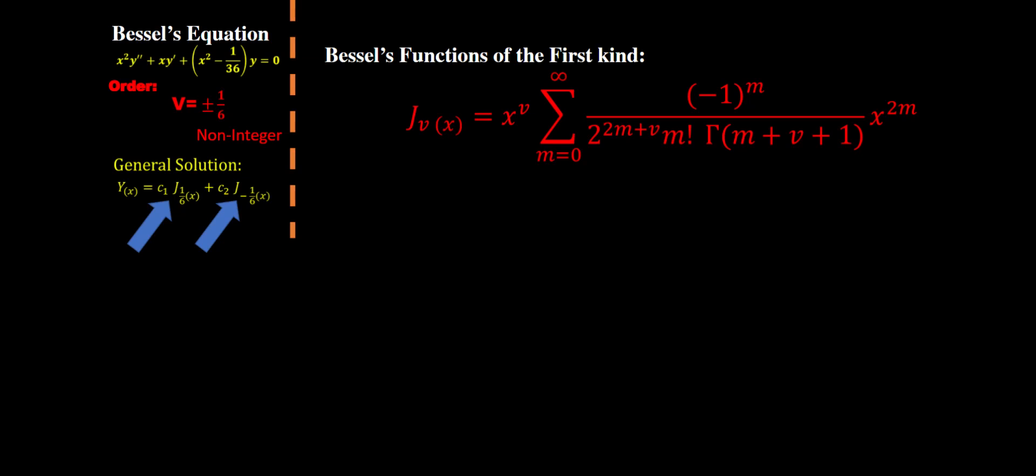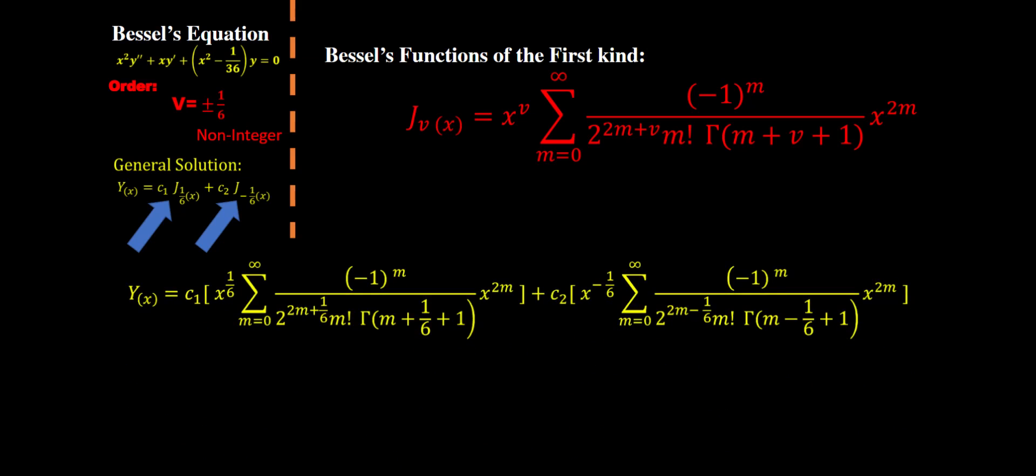What are these two Bessel functions of the first kind? We have a formula for them: Jᵥ equals xᵛ in a big summation. There's also a strange looking thing here - this is a gamma function. Now to continue, we're going to take this and plug it into our general solution. c₁ and c₂ stay unchanged, and for our two J functions we plugged this big formula in.